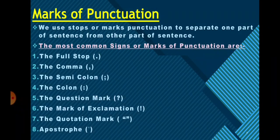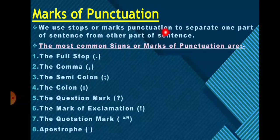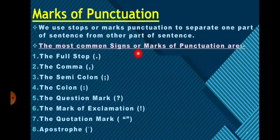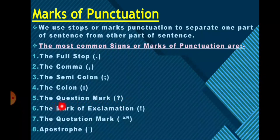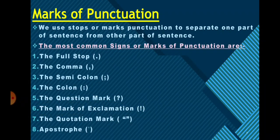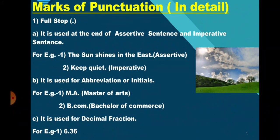We use stops or marks of punctuation to separate one part of a sentence from another. The most common signs or marks of punctuation are: the full stop, the comma, the semicolon, the colon, the question mark, the mark of exclamation, the quotation mark, and the apostrophe. Now students, we are going to learn marks of punctuation in detail.